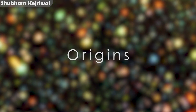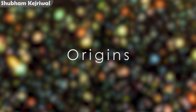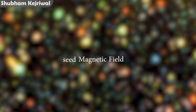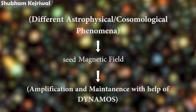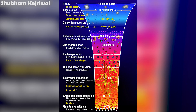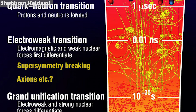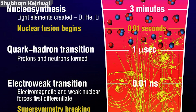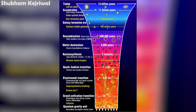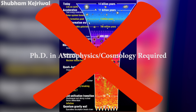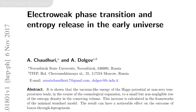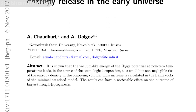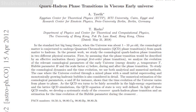Now let us talk about where exactly these magnetic fields originate from. There are hypotheses regarding a seed magnetic field — a very small amount of magnetic field generated through different processes — which can later be amplified and maintained through dynamos. One hypothesis suggests that during the electroweak phase transition of the universe, or during the quark-hadron transition phase of the universe, these magnetic fields could have originated. There will be links to research papers about these transition phases in the description below.